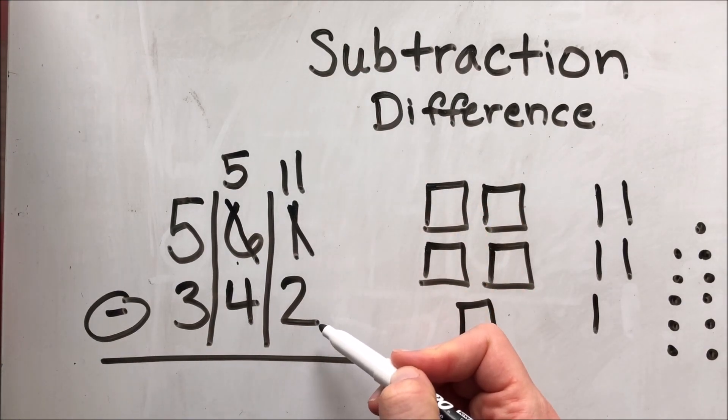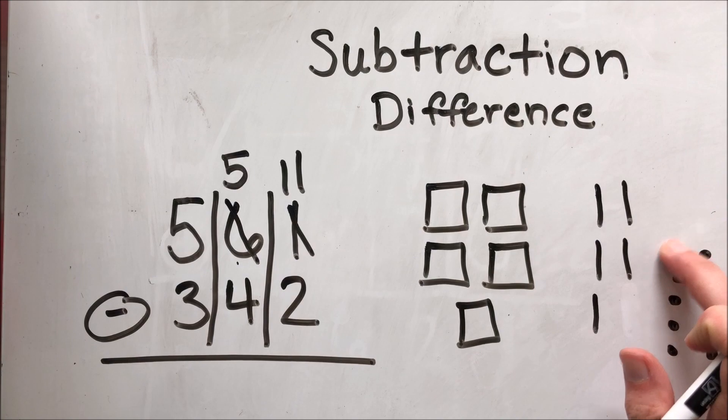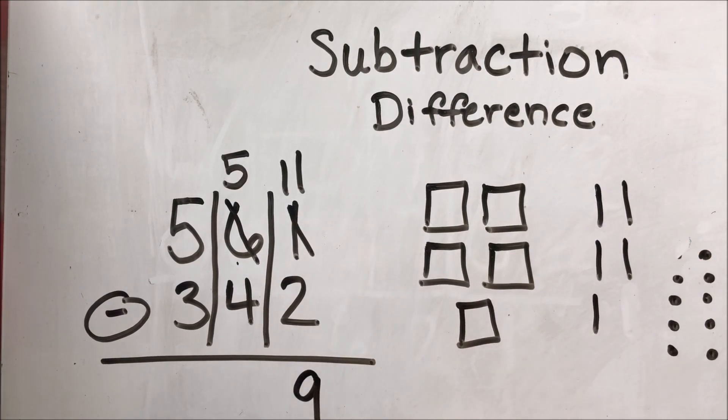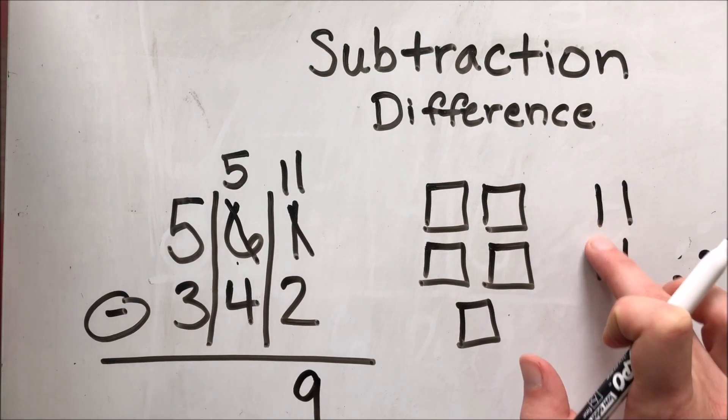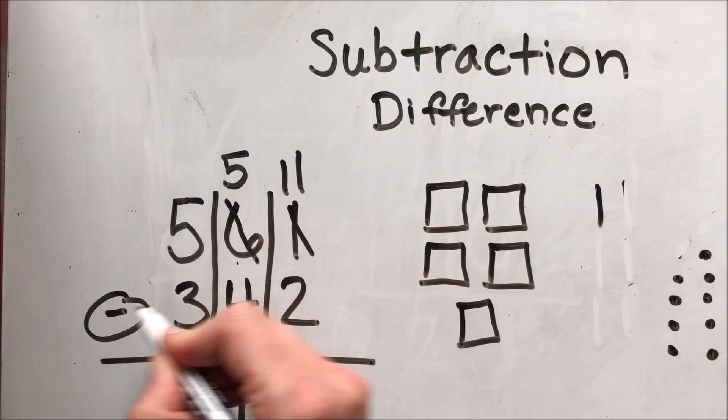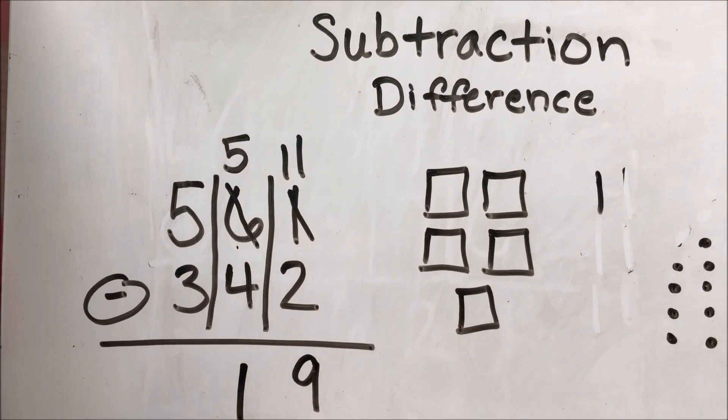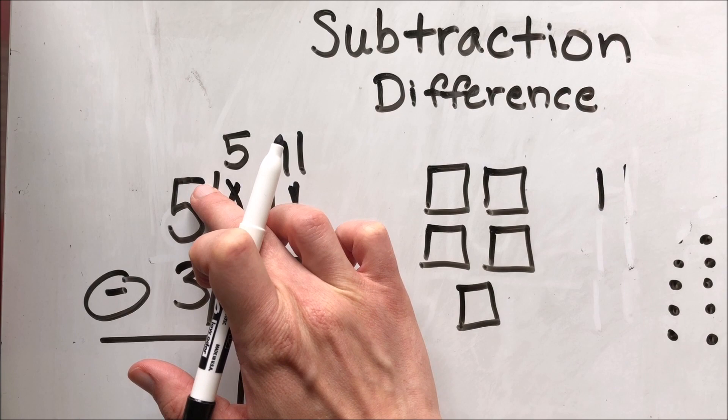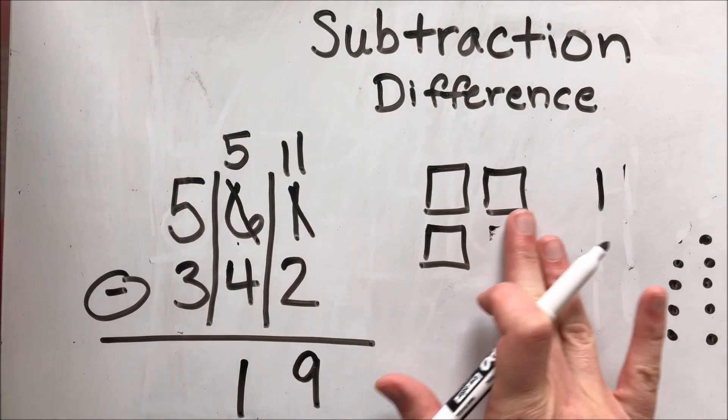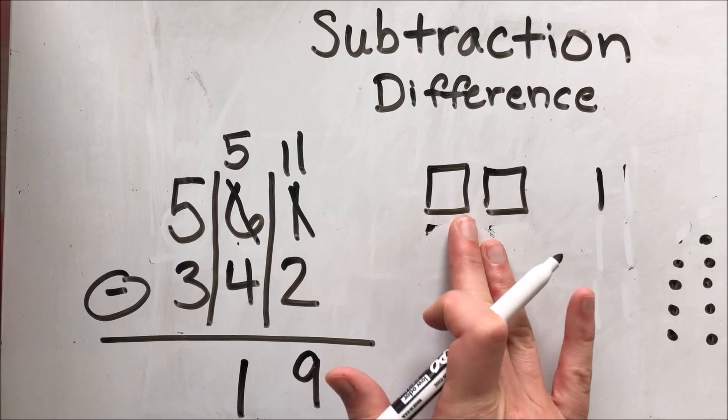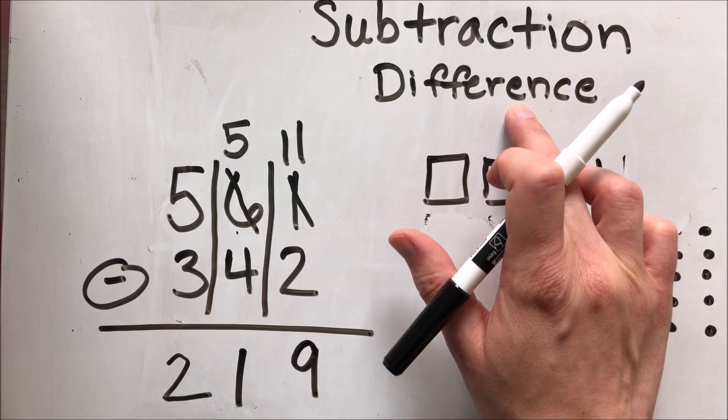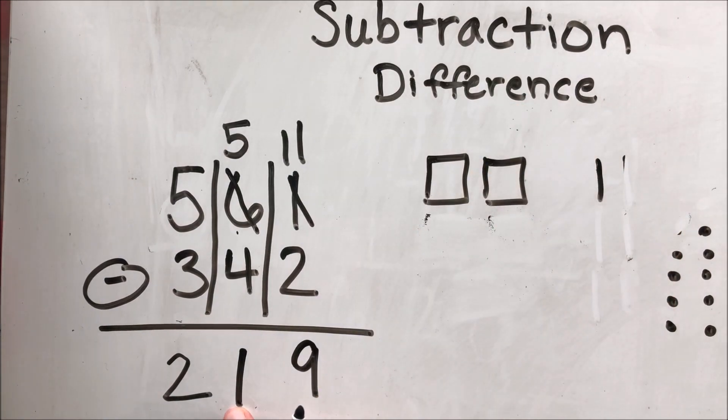Now I have 11 minus two. I can come over to my picture and take away two ones. Now I have nine ones left. I come over to my picture and I take away four tens. Now I have one ten left because five minus four equals one. Then I come over to my hundreds. I have five hundreds. They want me to take away three. So I'm going to erase three of my hundreds and I have two hundreds left, which means my difference, my answer to my subtraction problem is 219.